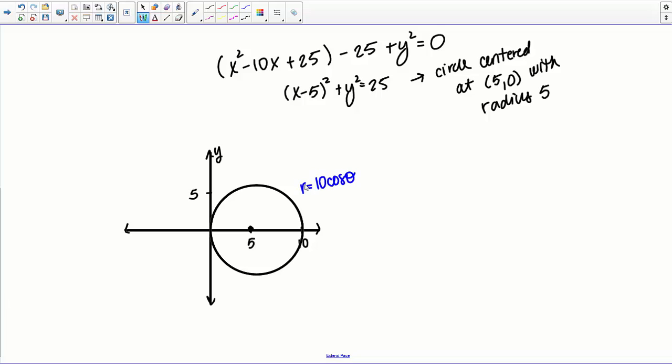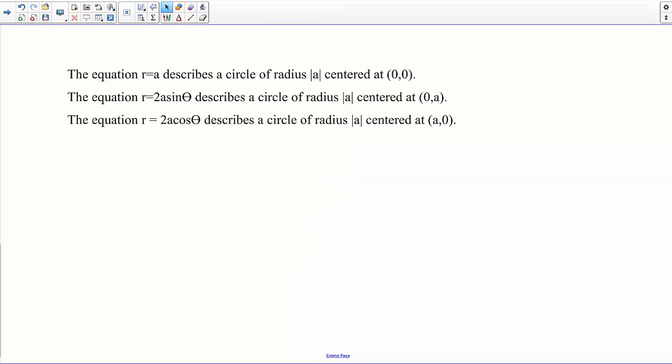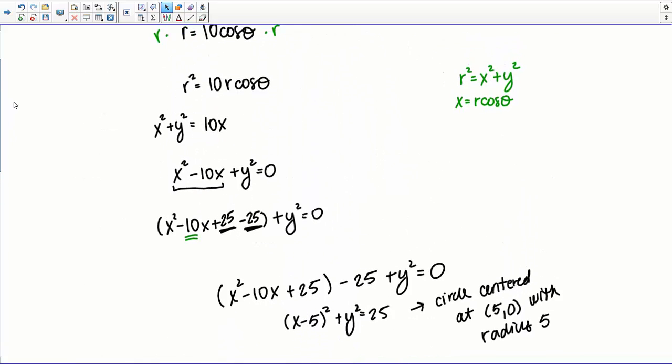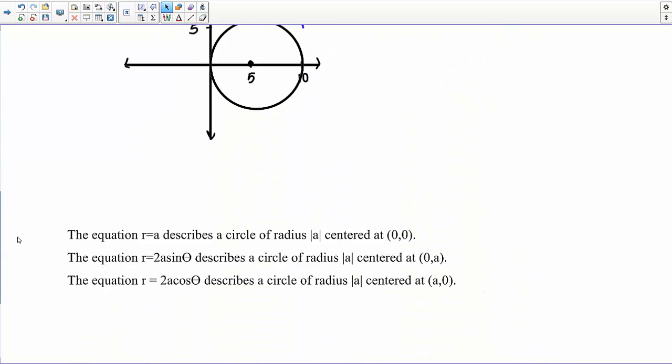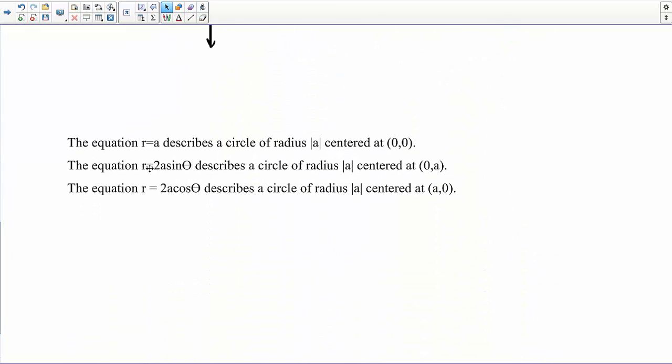So the equation of the circle then in polar coordinates was R equals 10 cosine of theta. And in fact, we can make some generalizations. We already know from before that the equation R equals A describes a circle of radius absolute value of A centered at the origin. But using the same sort of argument that I used up here to show you this graph, we can also say that the equation R equals 2A cosine of theta describes a circle of radius absolute value of A centered at the point (A,0). And also the equation R equals 2A sine of theta describes a circle of radius absolute value of A centered at the point (0,A).